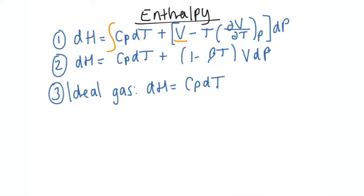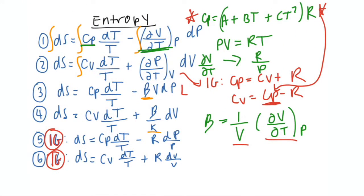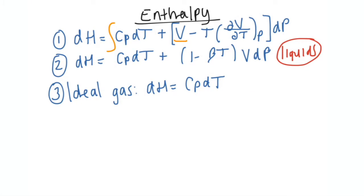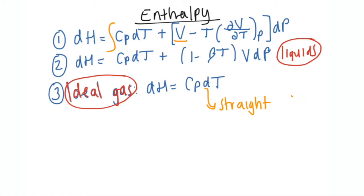For enthalpy equation two, I'll note this is for liquids because you're usually going to be using beta and kappa for liquids. Equation three is for ideal gases — pretty straightforward: change in enthalpy equals CP DT. This comes straight from tables — the correlation for your CP. Unless it's given as a constant, in which case when you integrate it's just, say, 5T. I went through how to use the tables for heat capacity in my heat effects video.